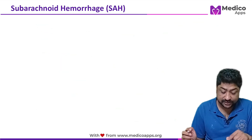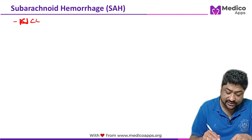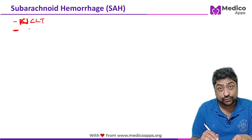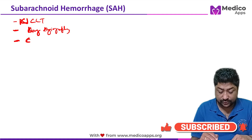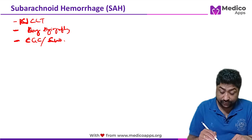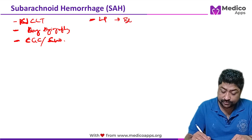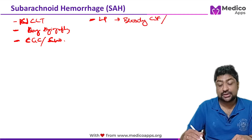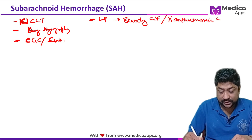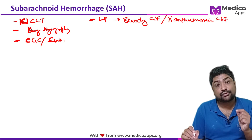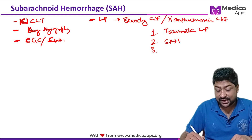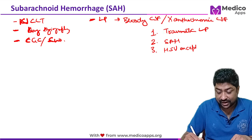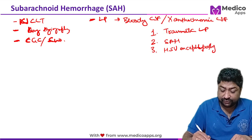For workup, we perform NCCT and conventional angiography. ECG and ECHO can be done to rule out other causes. On lumbar puncture, you will find bloody CSF, sometimes described as xanthochromic CSF. The differential diagnosis of bloody or xanthochromic CSF — frequently asked — is: most common cause is traumatic LP, second is SAH, and third is HSV encephalopathy.